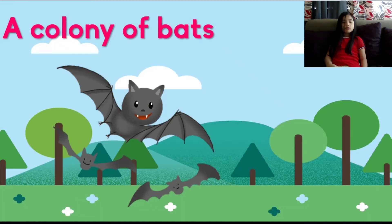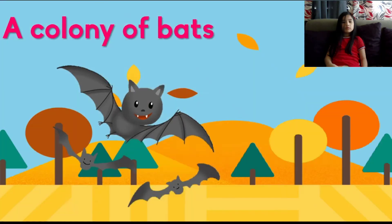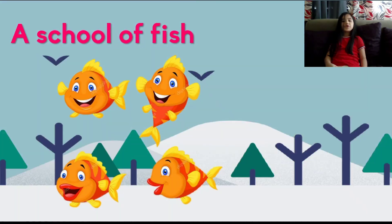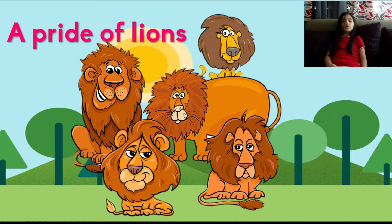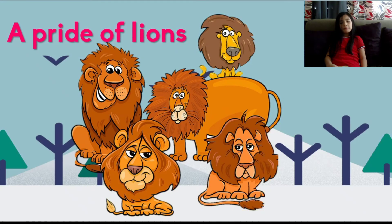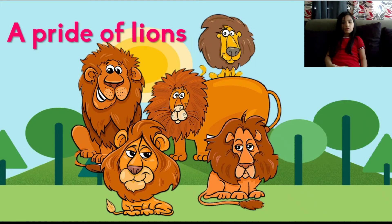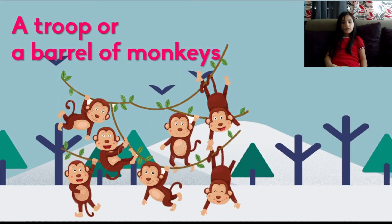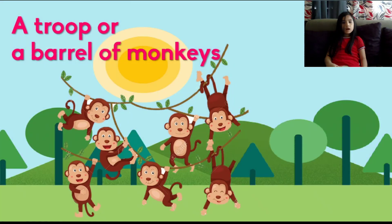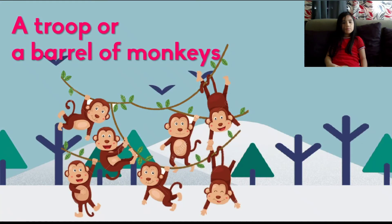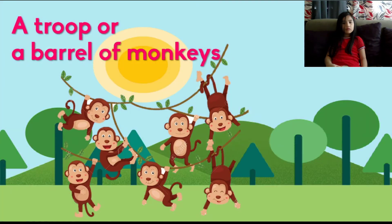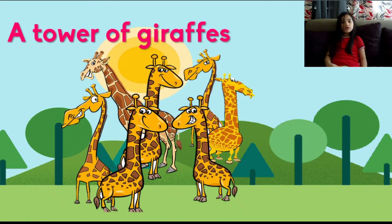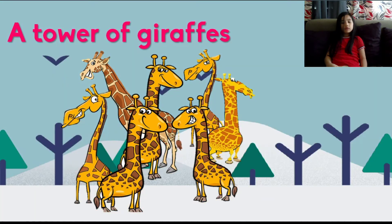A group of bats is called a colony. A group of fish is called a school. A group of lions is called a pride. A group of monkeys is called a troop or a barrel. A group of rats is called a tower.